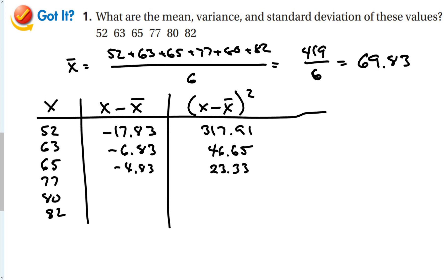77 minus 69.83 gives me 7.17 squared, which is 51.41. 80 minus 69.83 gives 10.17 squared, which is 103.42. And finally, 82 minus 69.83 gives 12.17 squared, which is 148.11.